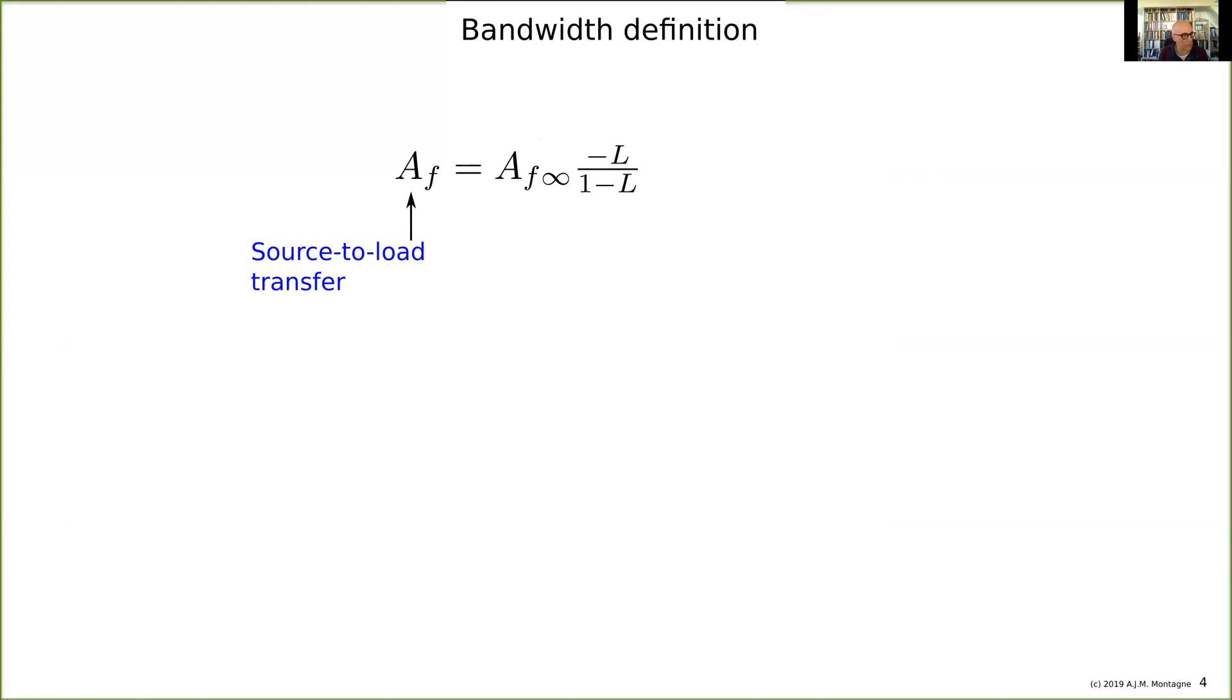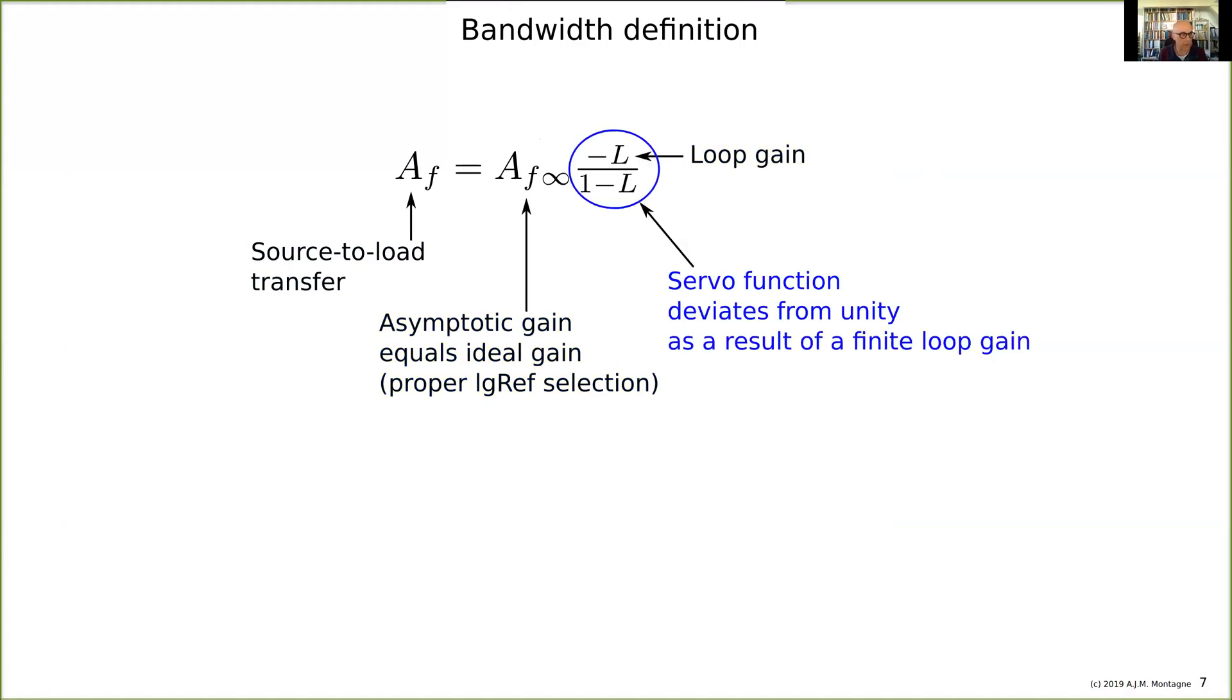The source-to-load transfer can be written as a product of the asymptotic gain and the servo function, which is in fact completely determined by the loop gain. If the reference variable for the loop gain is correctly selected, then the asymptotic gain equals the ideal gain, which was the gain designed when the controller of the amplifier was a nullor.